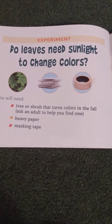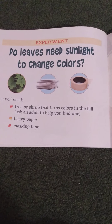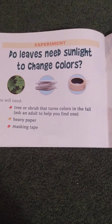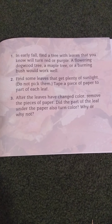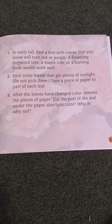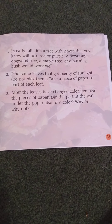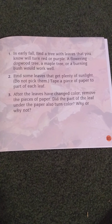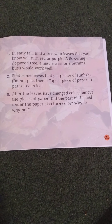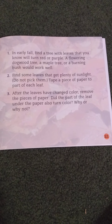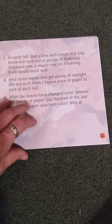Do leaves need sunlight to change colors? You will need a tree or shrub that turns colors in the fall — ask an adult to help you find one — plus heavy paper and masking tape. In early fall, find a tree with leaves that you know will turn red or purple. A flowering dogwood tree, a maple tree, or a burning bush would work well. Find some leaves that get plenty of sunlight, but do not pick them. Tape a piece of paper to part of each leaf. After the leaves have changed color, remove the pieces of paper. Did the part of the leaf under the paper also turn color? Why or why not?